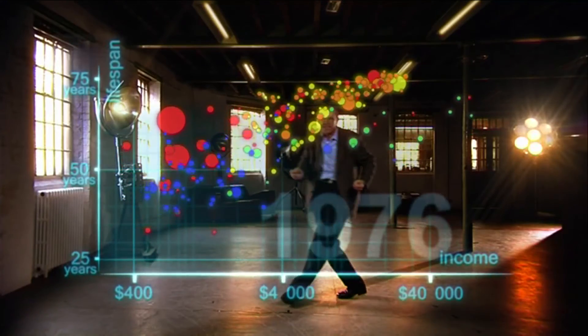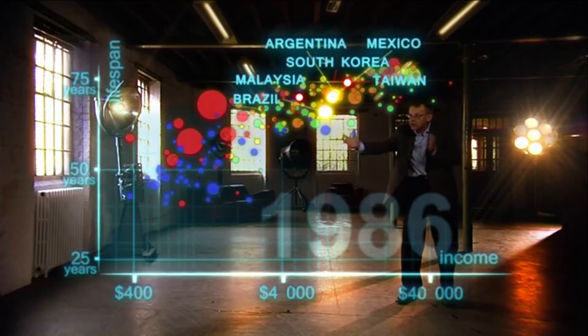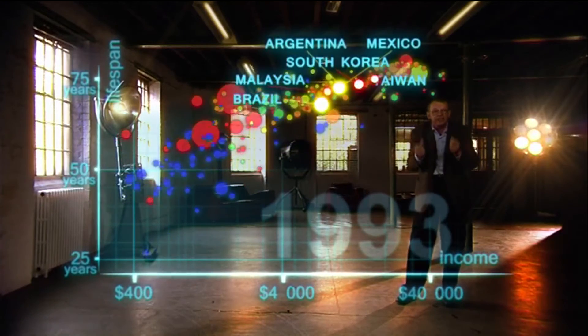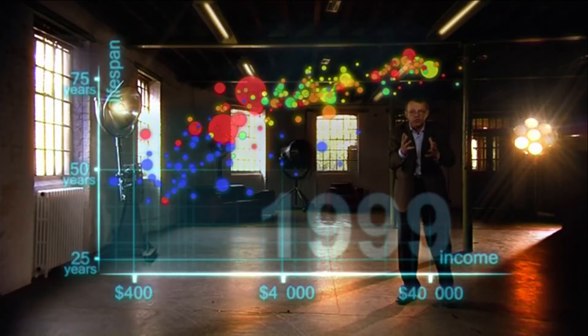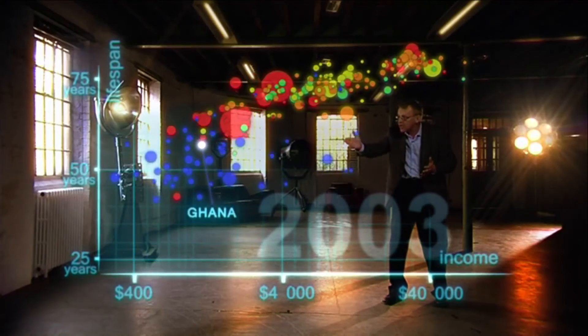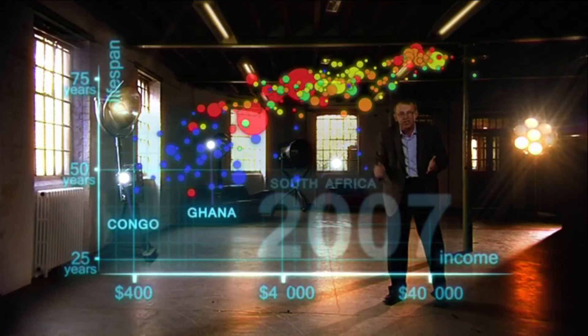And in the 1970s, then countries in Asia and Latin America started to catch up with the western countries. They became the emerging economies. Some in Africa follows. Some Africans were stuck in civil war and others hit by HIV.